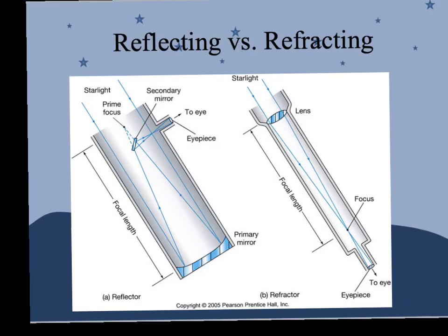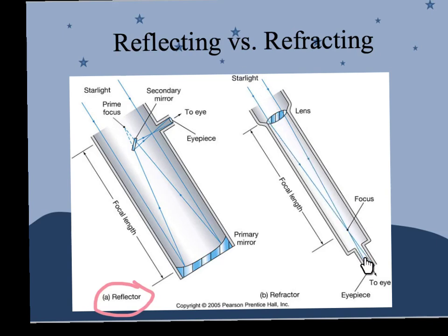This here is our reflecting telescope — you can see it's gathering light and reflecting it off a mirror. The refracting telescope gathers light through a lens, and it goes through a focus point to your eye.